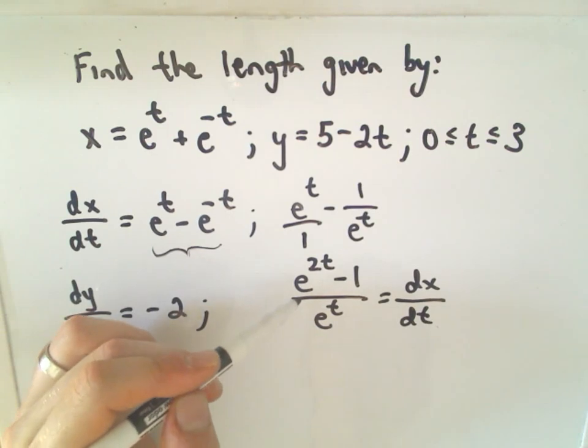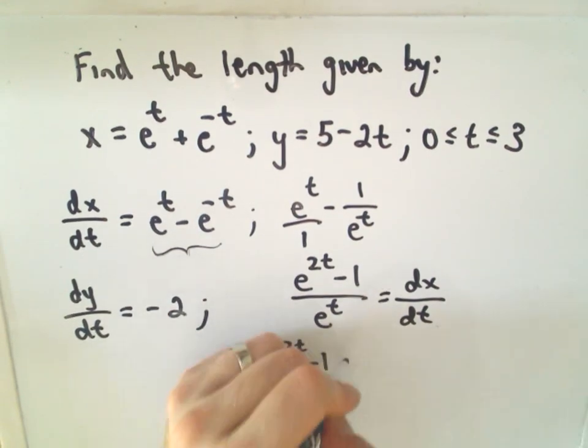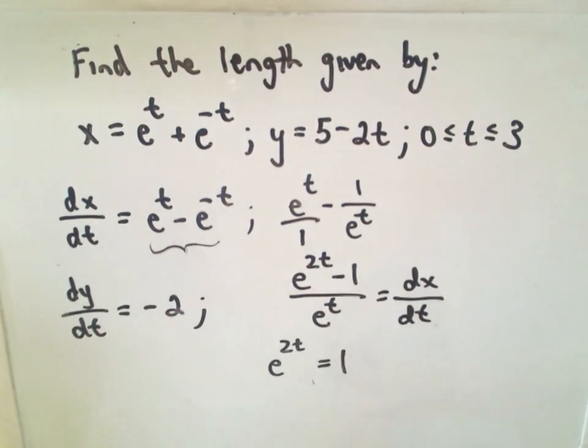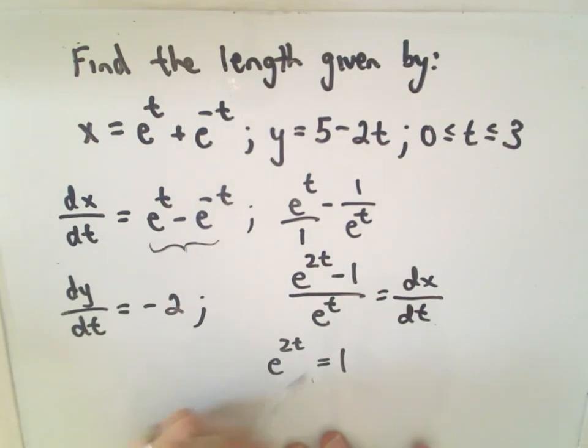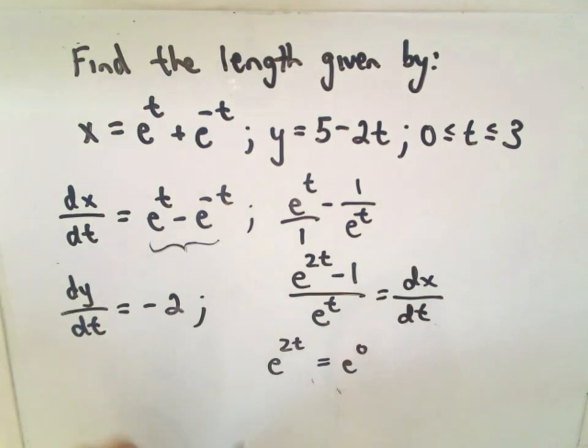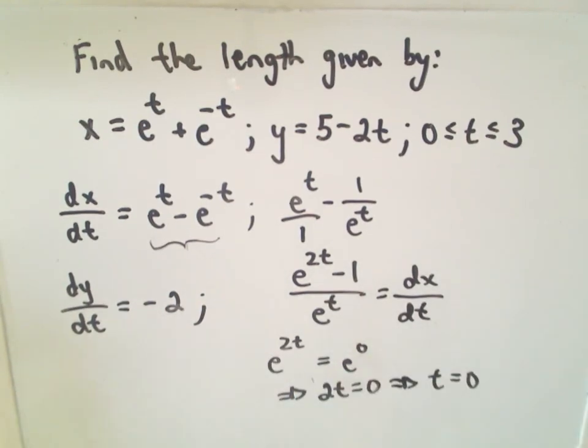Or, another place where you get a critical number is where the derivative is equal to 0. So, that means e to the 2t minus 1 would have to equal 0. Or, if we add 1 to both sides, that'll simply tell us that e to the t has to equal 1. Excuse me, e to the 2t has to equal 1. But we know e to the 0 is what equals 1. So, that tells us that 2t would have to equal 0. And that tells us that t equals 0, which happens to be an endpoint of the interval.